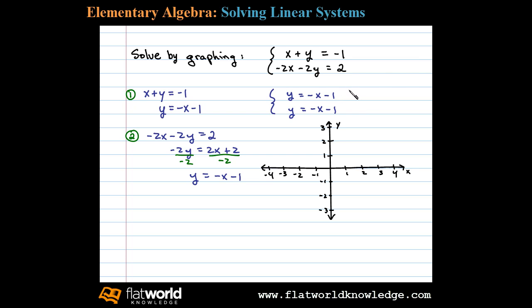On the same set of axes, by inspection we can see the slope is negative 1. Let's think of that as negative 1 over 1, so our rise will be negative 1 and our run will be 1. The y-intercept, which is the same for both lines, is (0, -1).